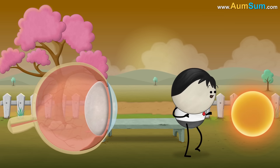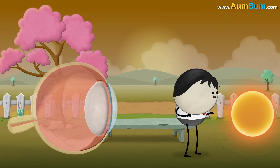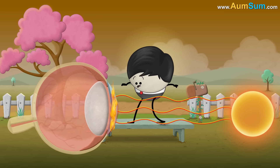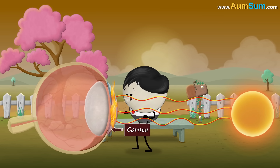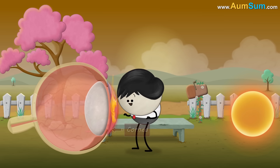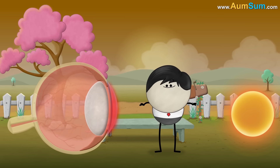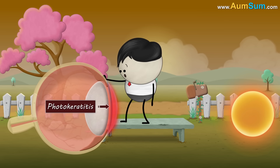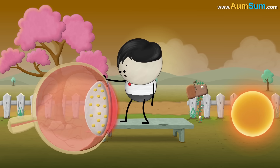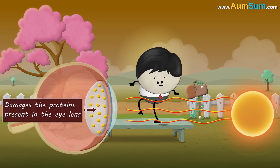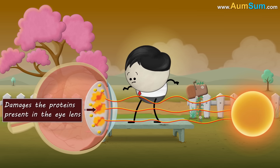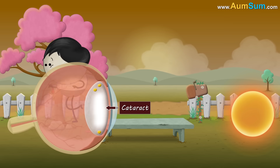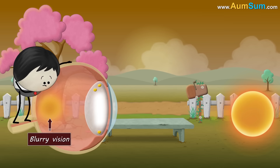When we look or stare at the sun for a long time, the emitted ultraviolet radiation burns the outermost layer of our eyes called the cornea, causing intense pain and inflammation. This condition is called photokeratitis. In addition to this, the radiation also damages the proteins present in the eye lens, giving us cataracts and causing blurry vision.